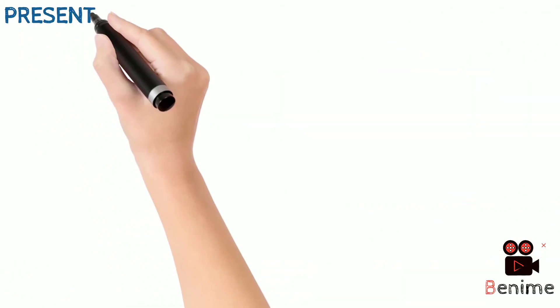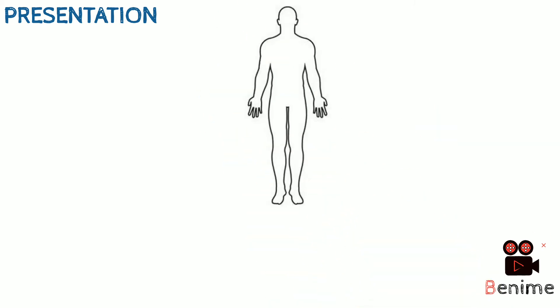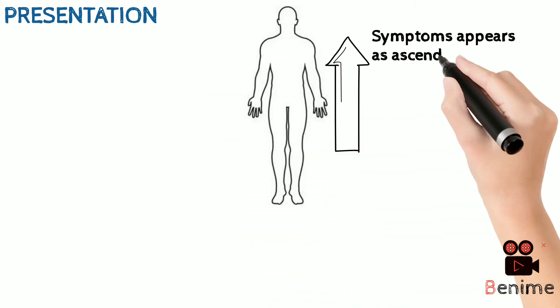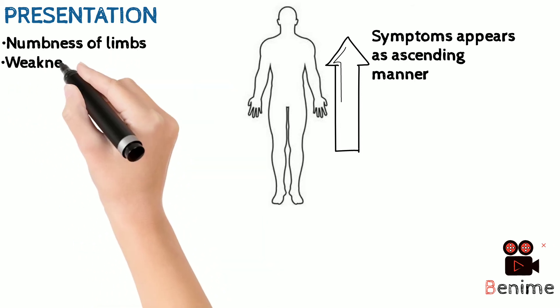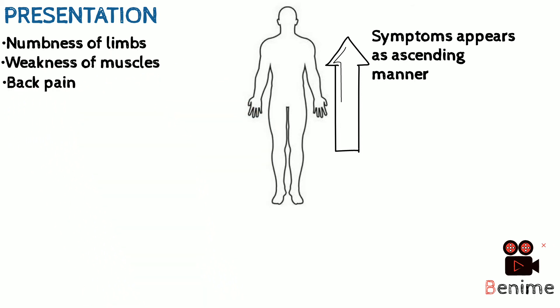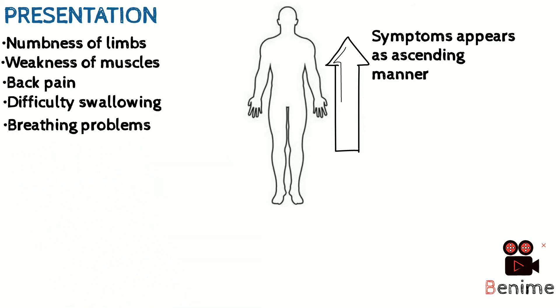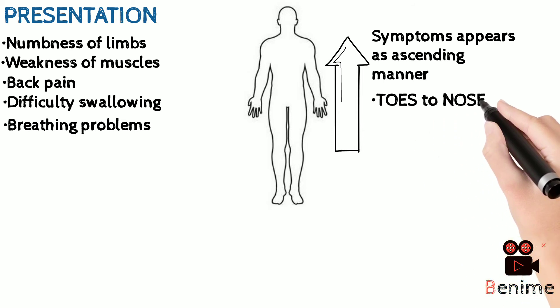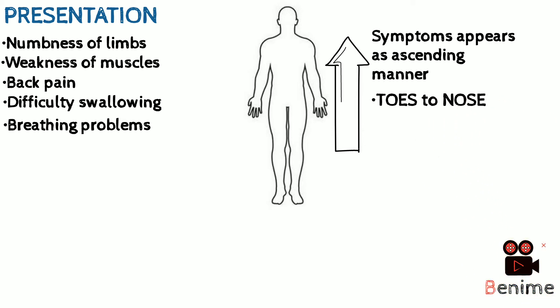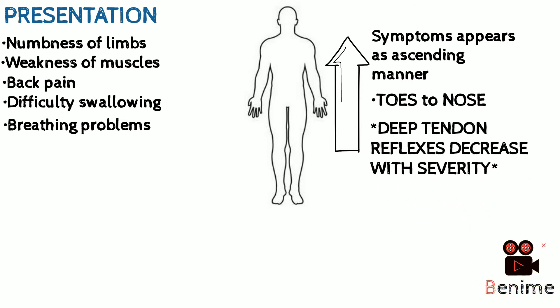The presentation of GBS is very peculiar, as the symptoms appear in the patient in an ascending manner. Symptoms may include numbness of limbs, weakness of muscles, back pain, dysphagia, and difficulty breathing. An easy way to remember the symptoms in GBS is by the mnemonic toes-to-nose, as it signifies the ascending manner of symptoms. An important point to note is that deep tendon reflexes do decrease in GBS.